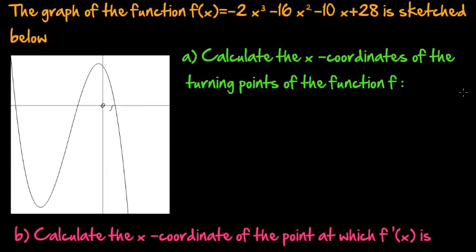So there's the sketch below and the first question is to calculate the x-coordinates of the turning points of the function f. So the turning points are very easily calculated. We can just make the derivative equal to 0. The derivative of this function is equal to negative 6x squared minus 32x minus 10 is equal to 0.